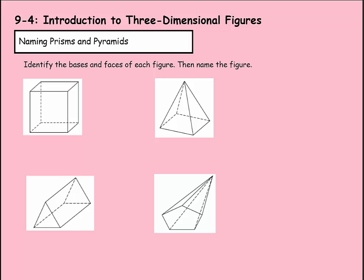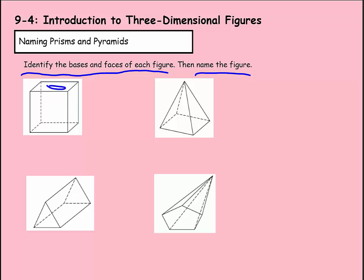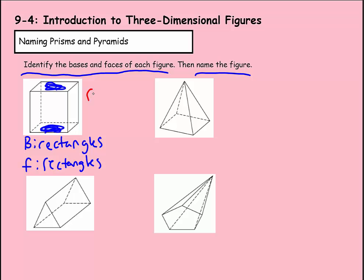Now we need to name these prisms and pyramids — identify the bases and faces of each figure, then name the figure. For this figure, you'll notice there are parallel bases on top and bottom. Most people choose the top and bottom as the base since it makes sense that the base is on the bottom. You'll notice that's a rectangular base, so for the base we'll say rectangles. For the faces we're also going to say rectangles. We're going to call this a rectangular prism because it has rectangular bases — the base is what gives the shape its name.